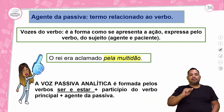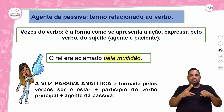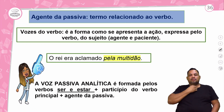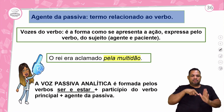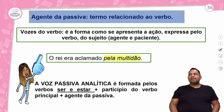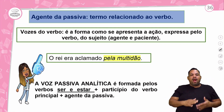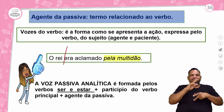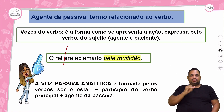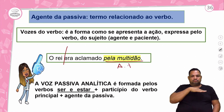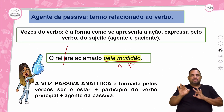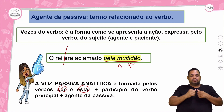Agente da passiva — termo relacionado ao verbo. O agente da passiva é aquele que vai fazer a ação na voz passiva analítica. Como no exemplo: 'O rei era aclamado pela multidão'. O rei é o sujeito da oração, mas ele só está recebendo a ação — ele é o sujeito paciente. Quem está praticando a ação? Pela multidão — é o agente da passiva. A voz passiva analítica é formada pelos verbos ser e estar mais o particípio do verbo principal.